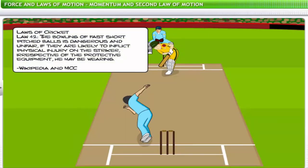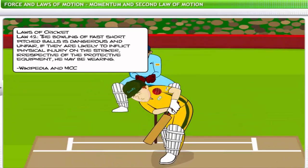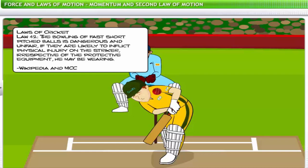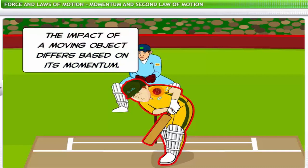According to Law 42 of the Laws of Cricket, the bowling of fast short-pitched balls is dangerous and unfair if they are likely to inflict physical injury on the striker, irrespective of the protective equipment he may be wearing. How could a small object like a ball inflict injury on a cricketer? The impact of a moving object differs based on its momentum, which is the product of the body's mass and velocity.